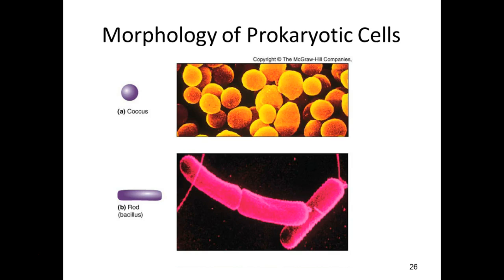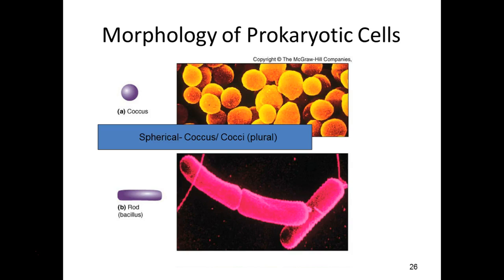These are three-dimensional organisms. For spherical bacteria, the term is coccus for a single cell and cocci for plural. This is Latin, and the endings are opposite of what we're used to in English: the '-i' ending is plural and '-us' is singular. If you remember they're opposite from what we're used to, you won't mix them up.